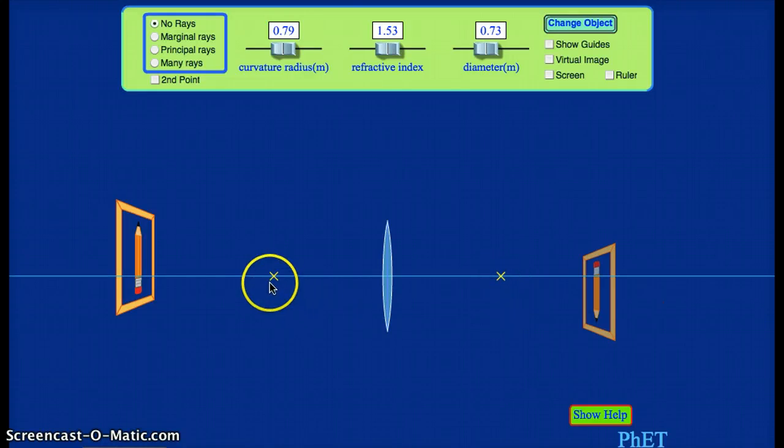And you notice these two yellow X's, both of these X's are the focal points of the lens. Every lens has two focal points, one on each side. And this distance here, from the focal point to the lens, is the focal length. The magnitude of this distance should be equal to the focal length of the lens.